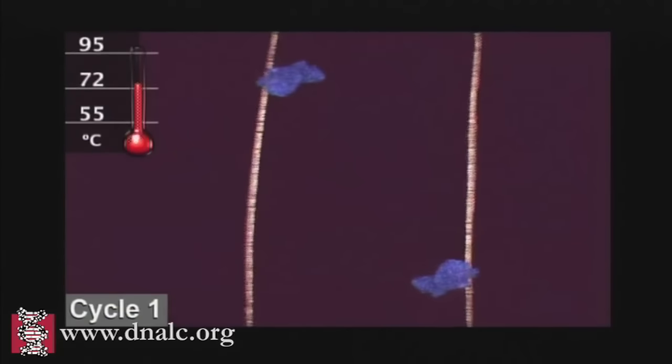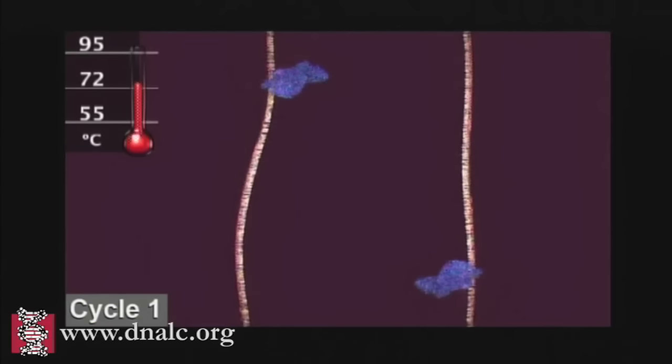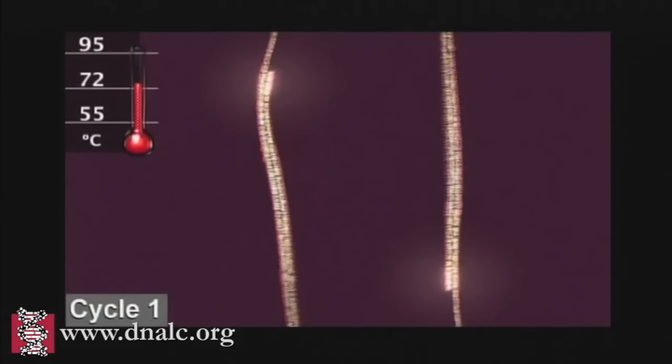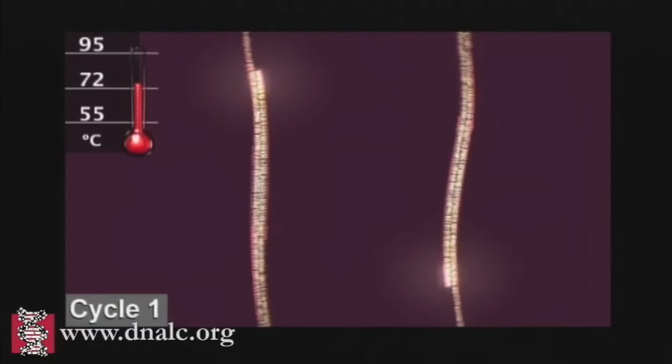At a slightly higher temperature, the enzyme Taq polymerase, shown here in blue, binds to the primed sequences and adds nucleotides to extend the second strand. This completes the first cycle.